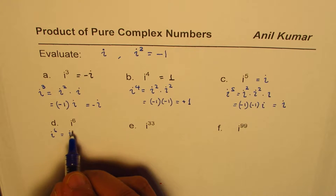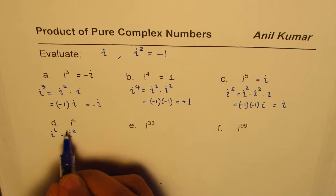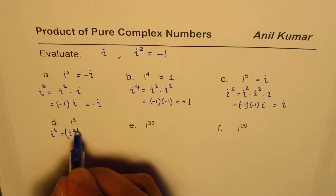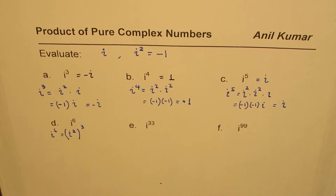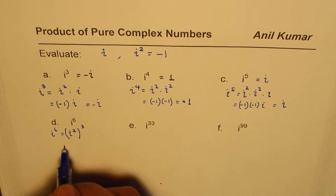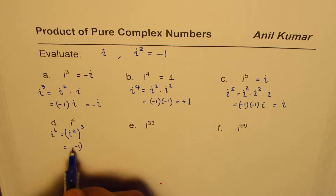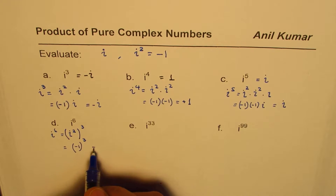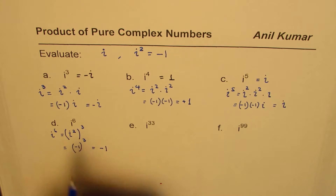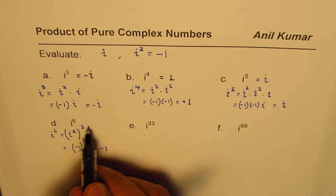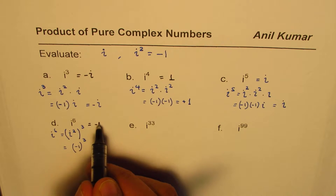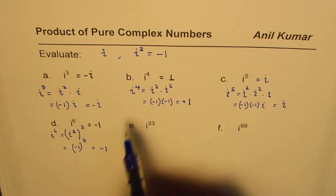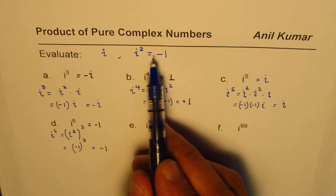For i to the power of 6, we can write it as i squared cubed, that is (i²)³. Since i squared is minus 1, this becomes minus 1 to the power of 3, which gives us minus 1. So i to the power of 6 equals minus 1, which is the same as i squared.